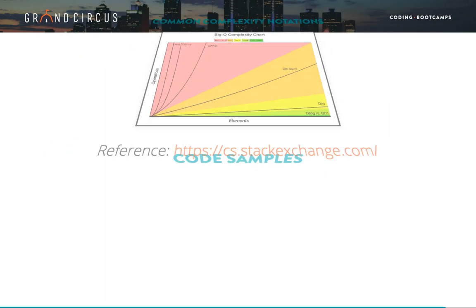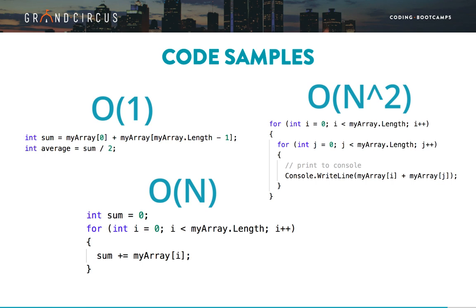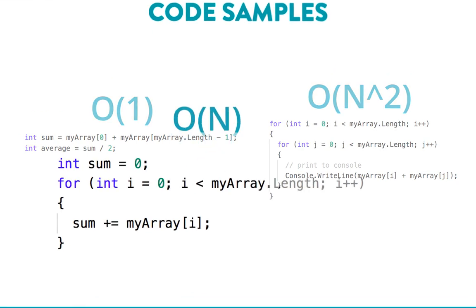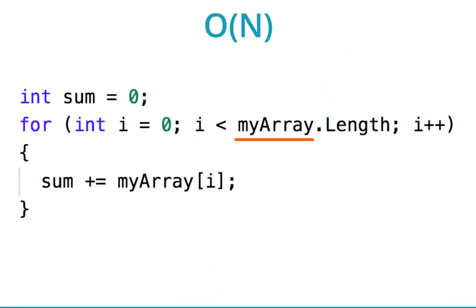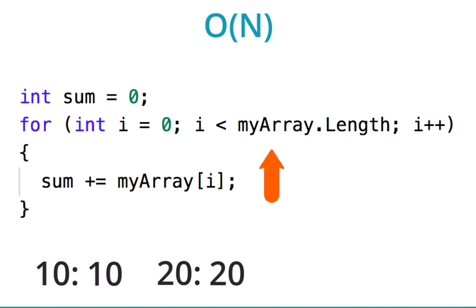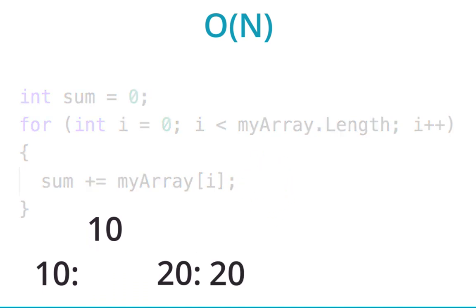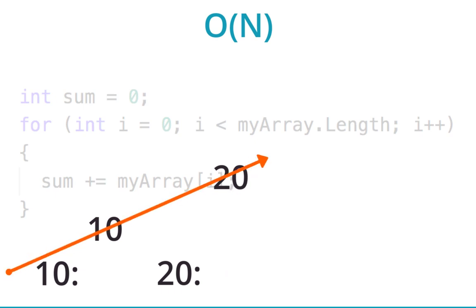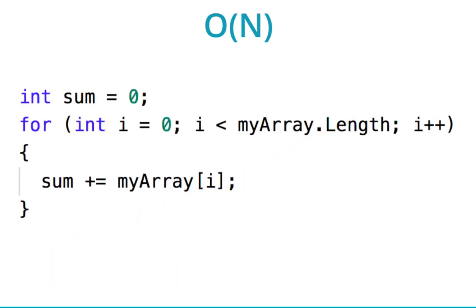It might be helpful to see some concrete examples in code. Let's look at three of the most basic orders: order 1, order N, and order N squared. These code snippets are in C#, but even if that's not your language, you should be able to get the idea. Let's start with order N. This code loops through an array from beginning to end. If there are 10 items in the array, it will loop 10 times; if there are 20 items, it will loop 20 times. When the array length doubles, the loops double. That's the definition of order N. This demonstrates the rule of thumb that when you have a single loop, it's usually order N.